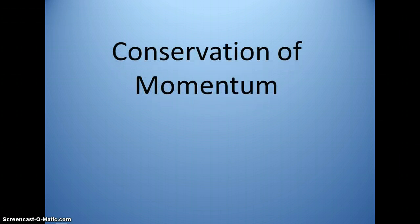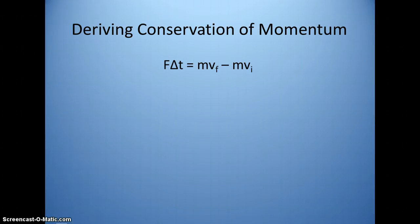We'll first start by deriving conservation of momentum. It basically starts with our math rep for impulse, which is F∆t = mv_f - mv_i.